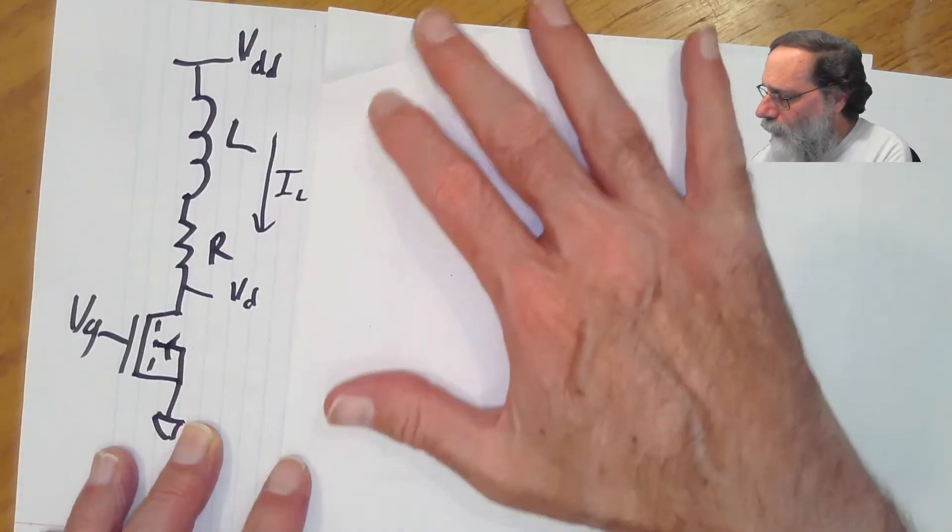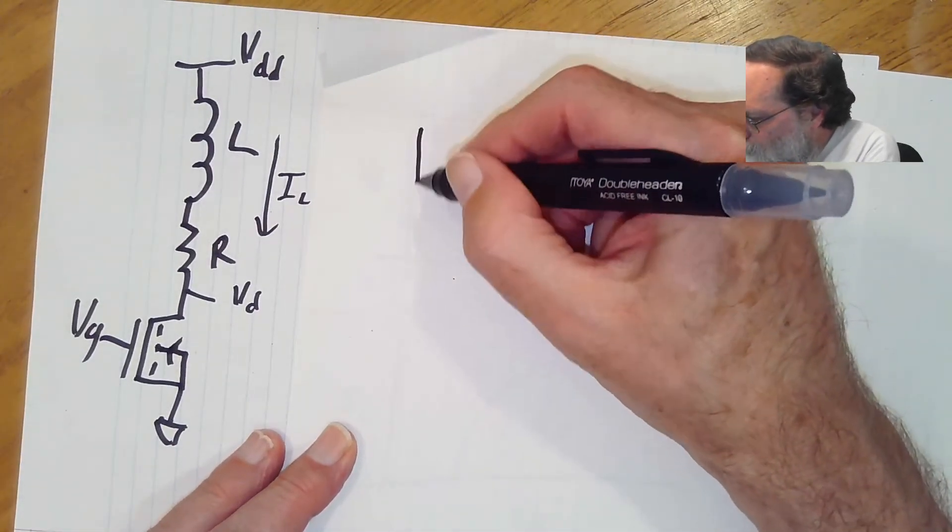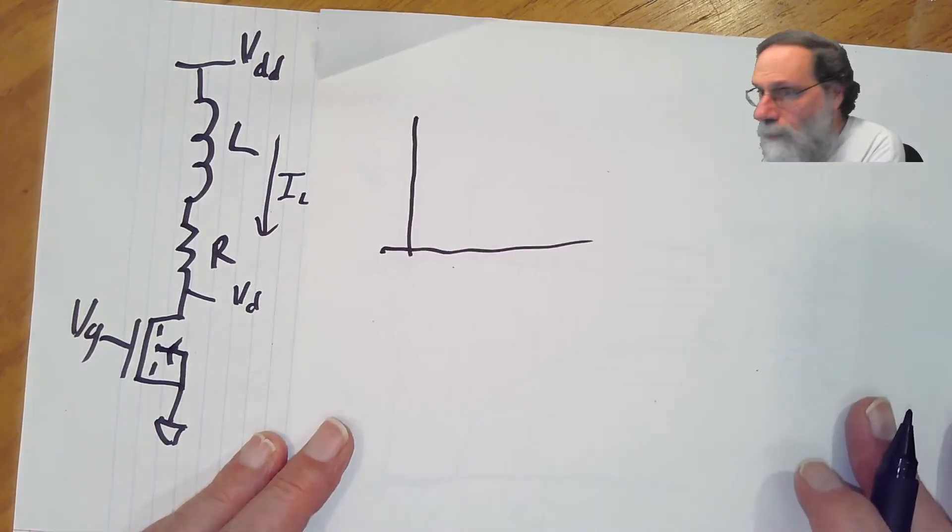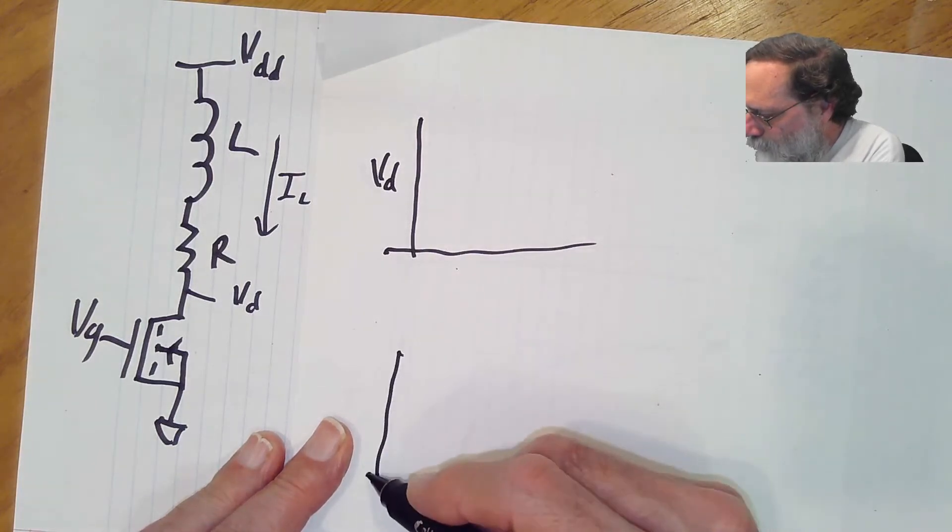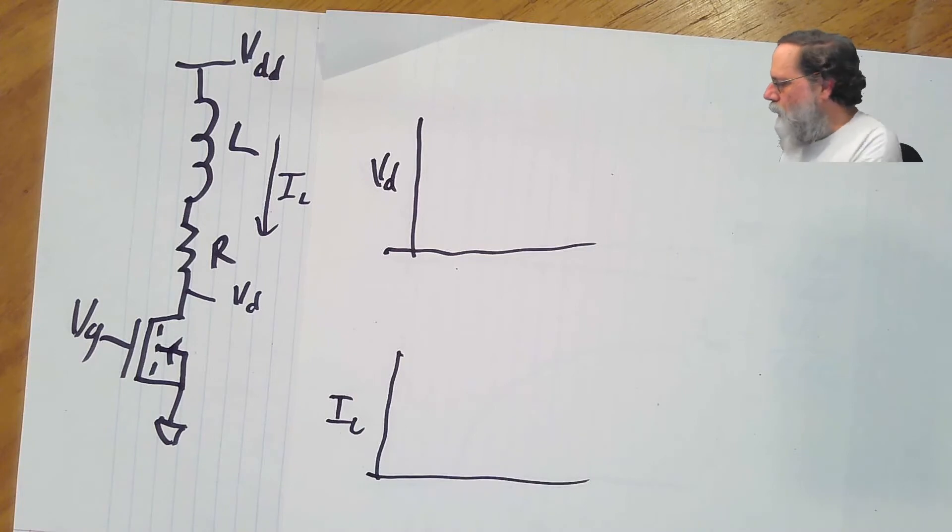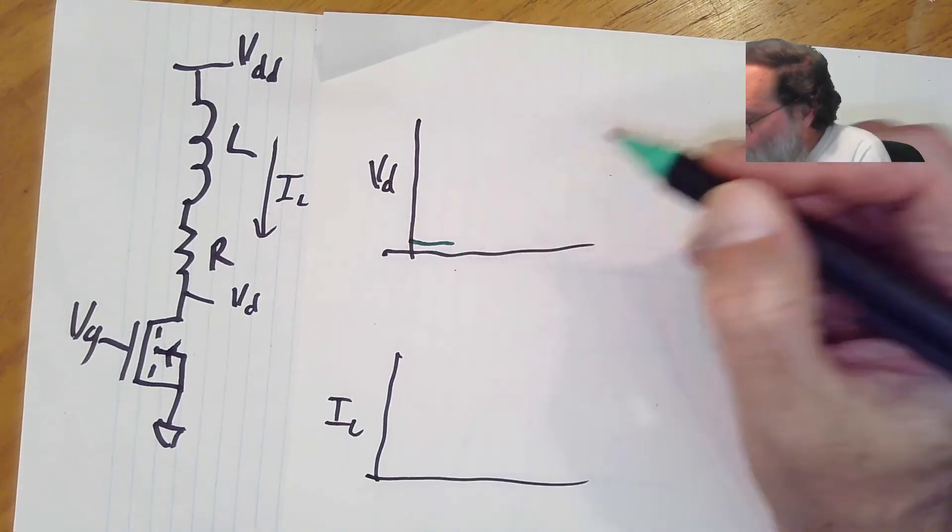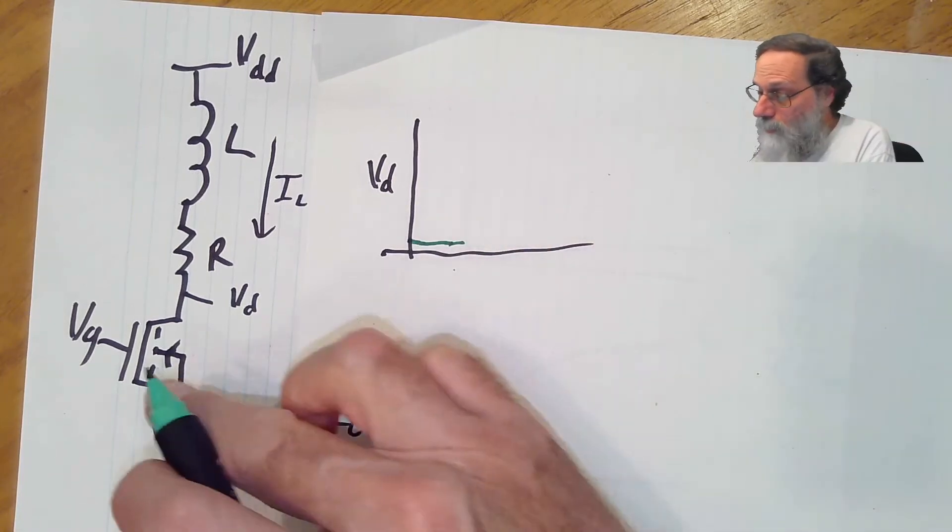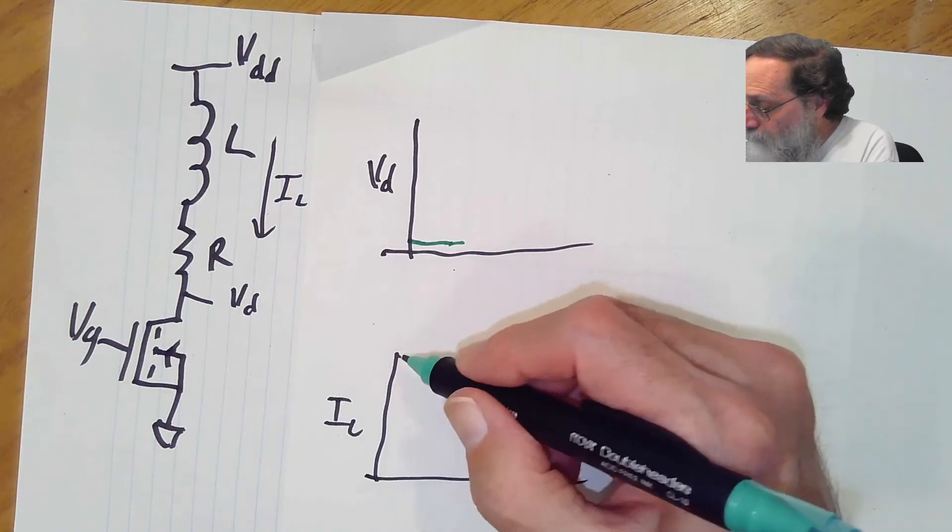For turning things off, we're still going to do the same sort of voltage on the drain, current through the inductor, but now we're starting at a low voltage here, maybe a little bit more than zero because of the on resistance of the transistor, but a pretty big current.